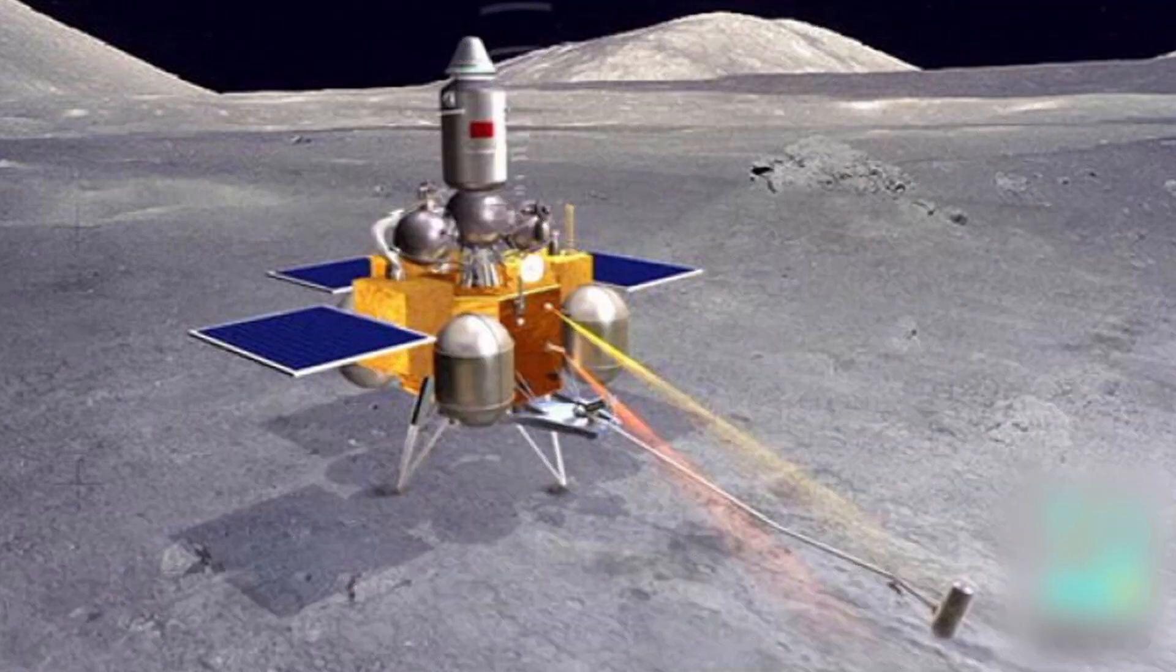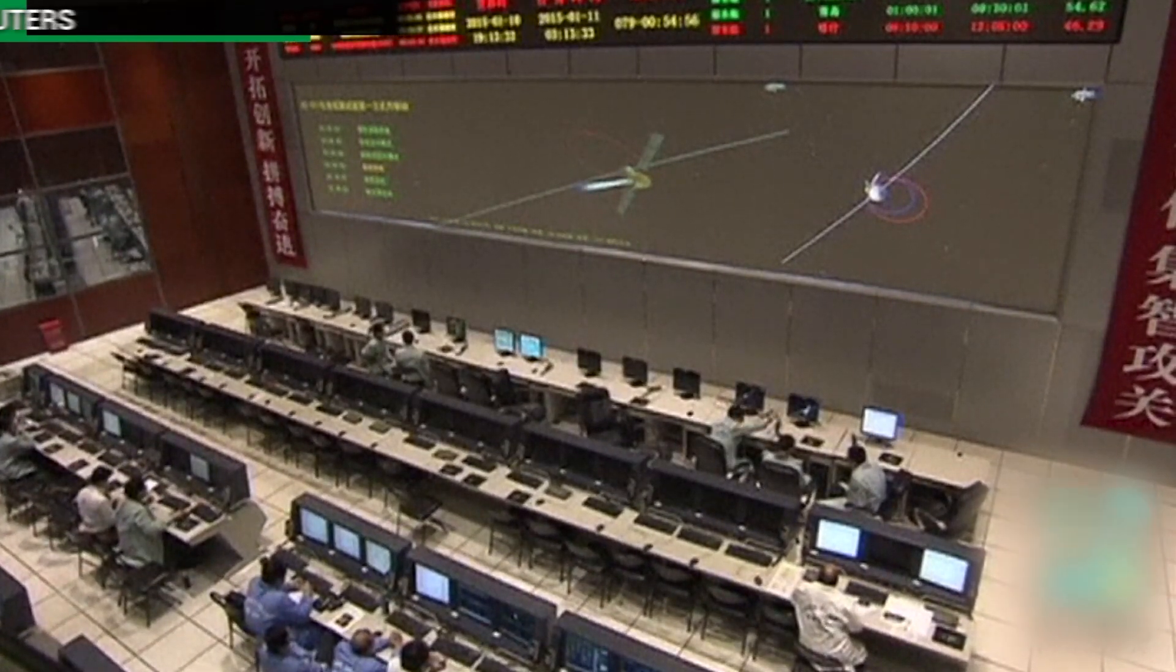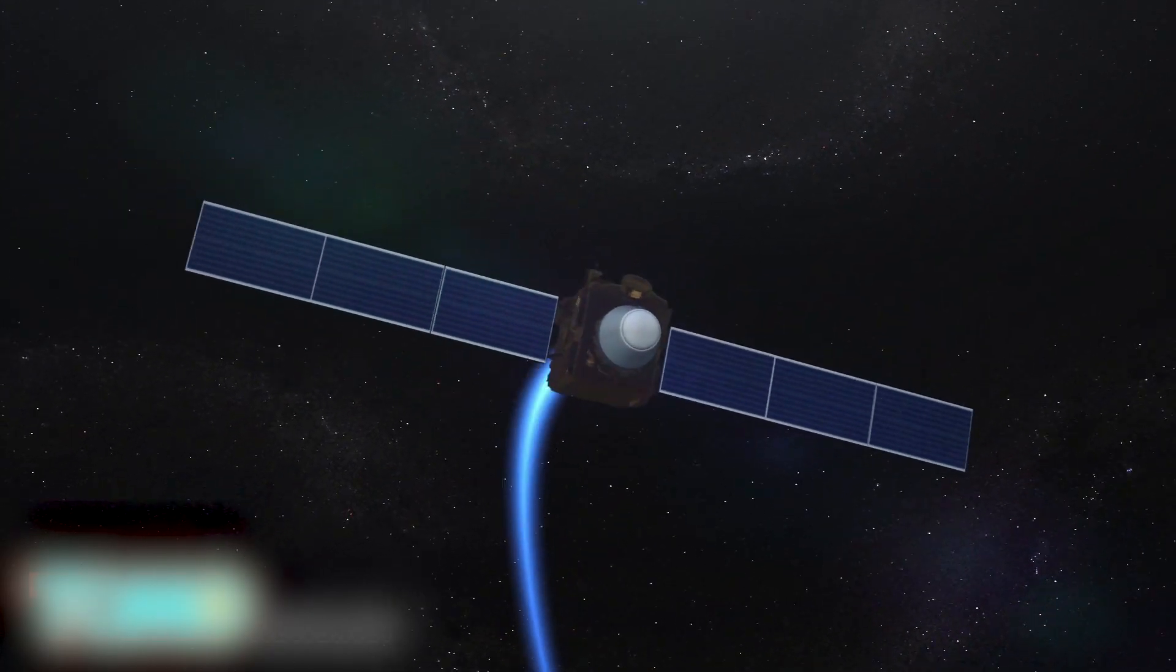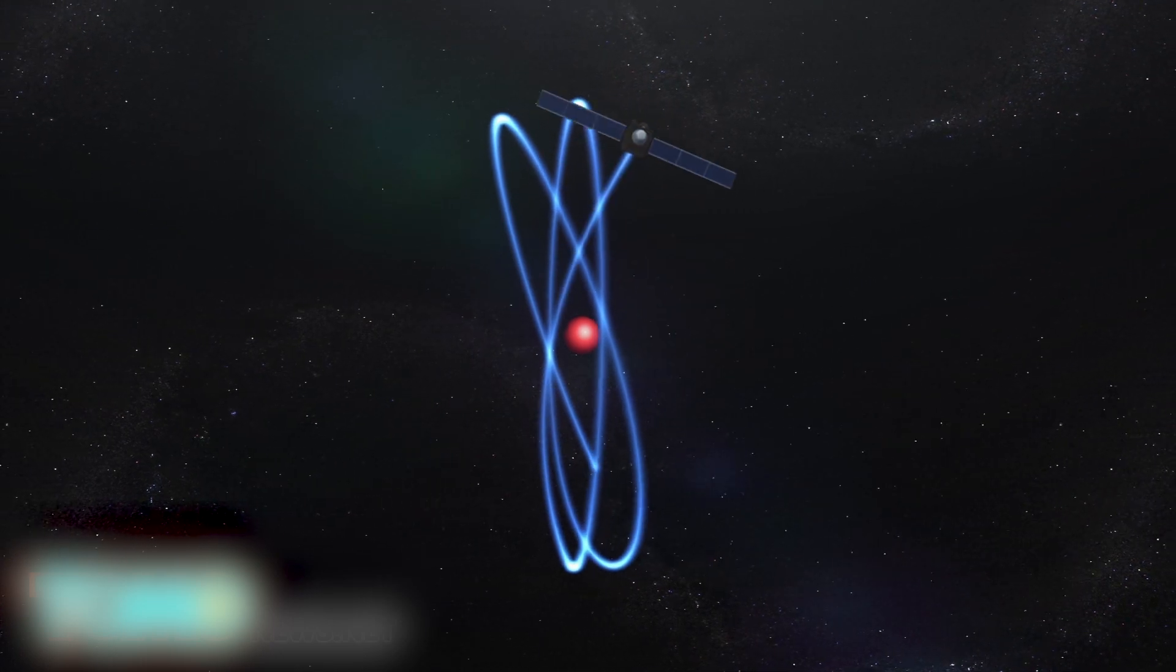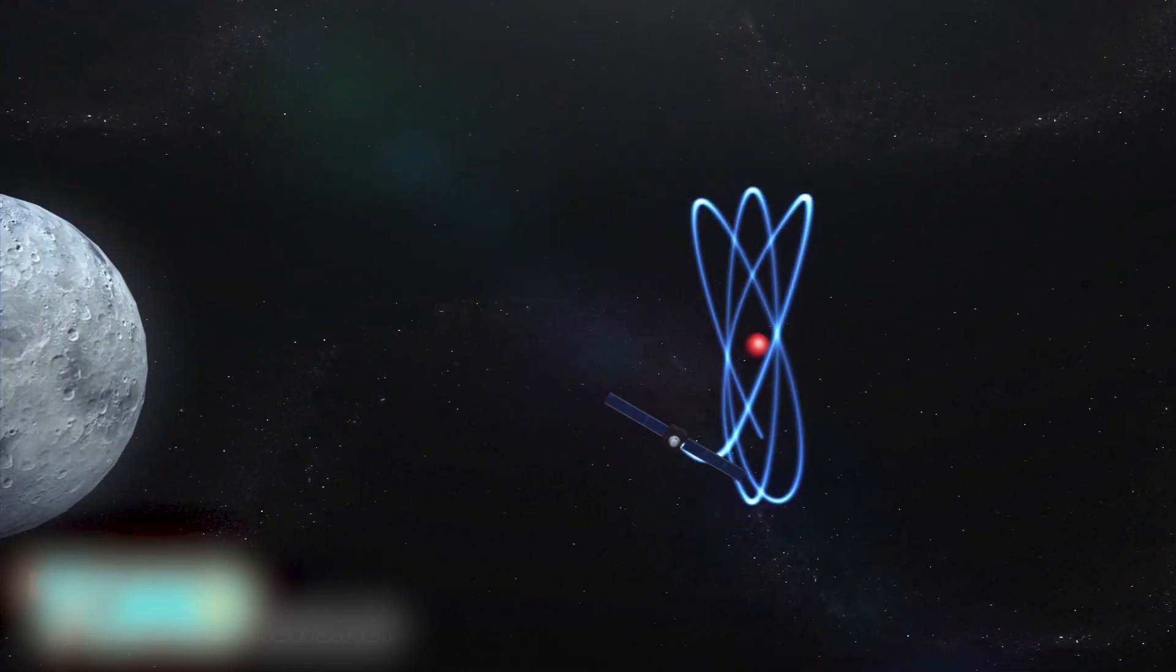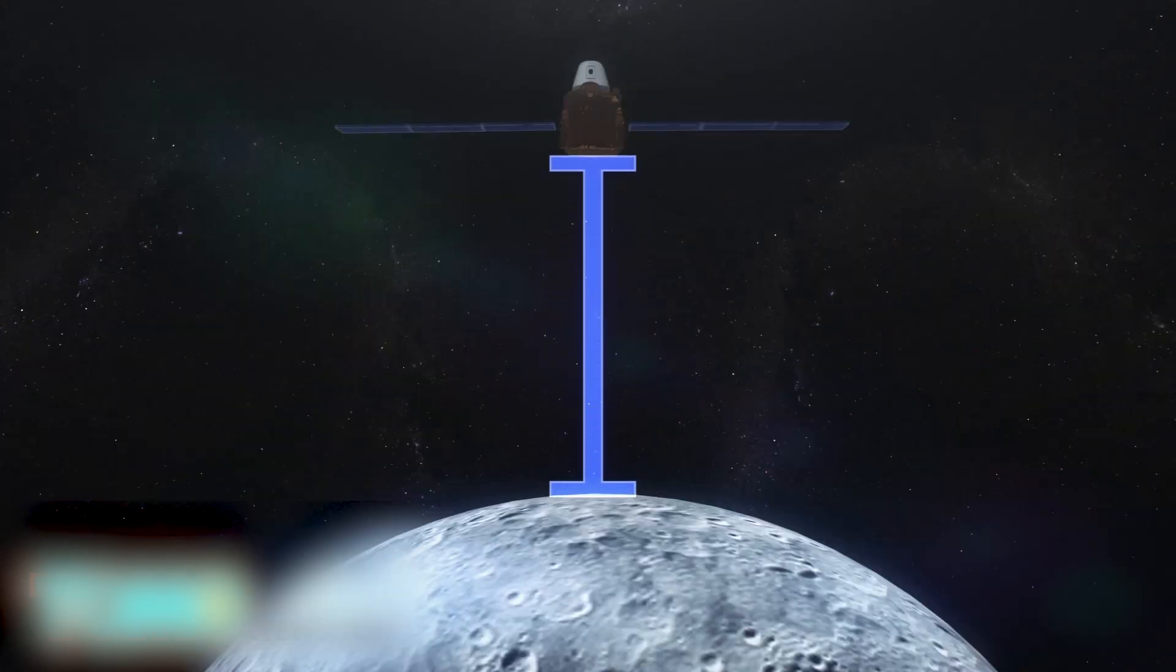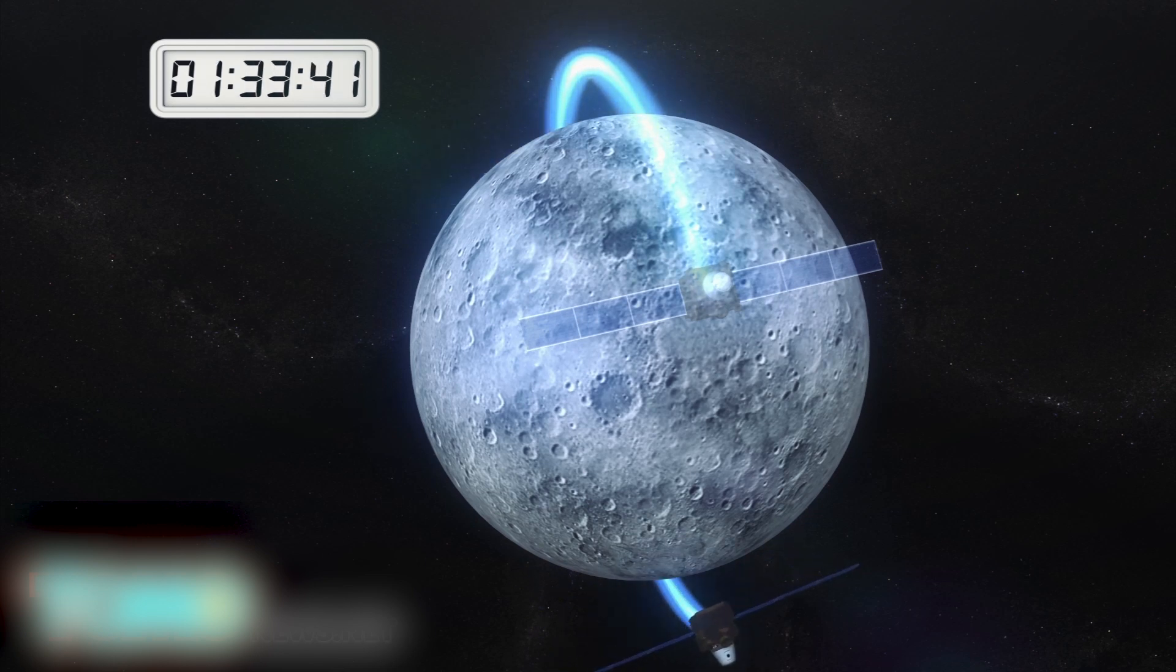The service module of China's test lunar orbiter enters moon orbit. The service module of China's unmanned test lunar orbiter entered a 127-minute moon orbit on Tuesday. The service module completed three circles around the second Lagrange point, or Earth-Moon L2, and left for lunar orbit on January 4. The module is currently flying in a 127-minute orbit at an altitude of 200 kilometers above the moon's surface.